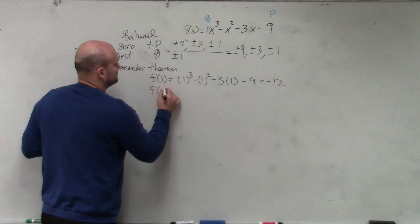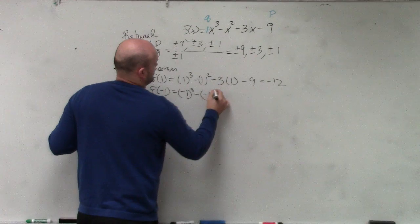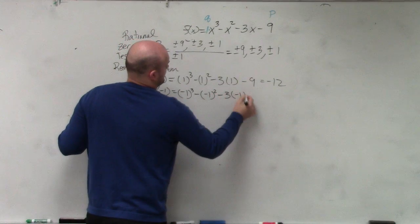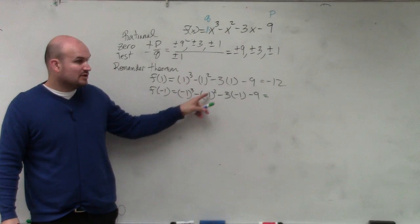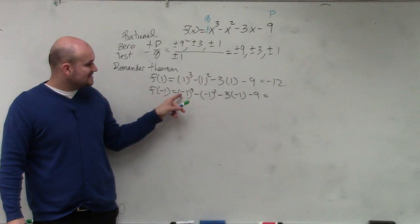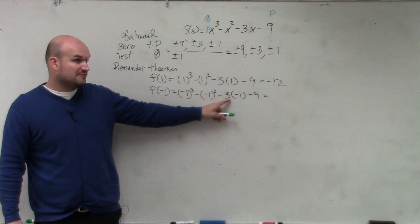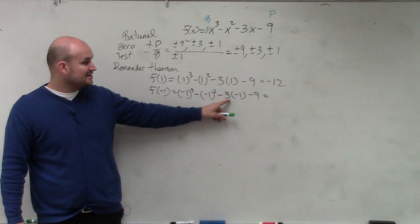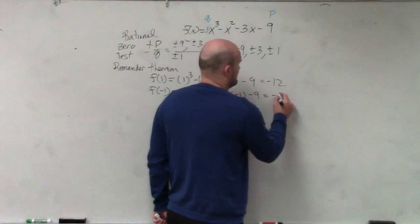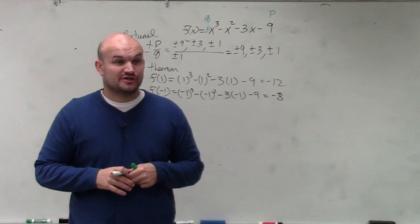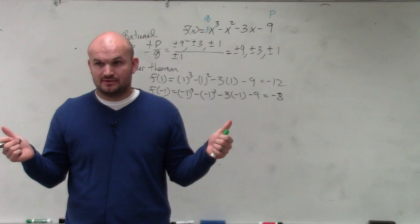So let's do negative 1. Negative 1 cubed is negative 1, negative 1 squared is positive 1, so that's negative 2. That becomes a positive 3, so now I'm up to positive 1. Positive 1 minus 9 is negative 8. So 1 and negative 1 are not actual zeros. They're possible rational zeros but they're not actually zeros.